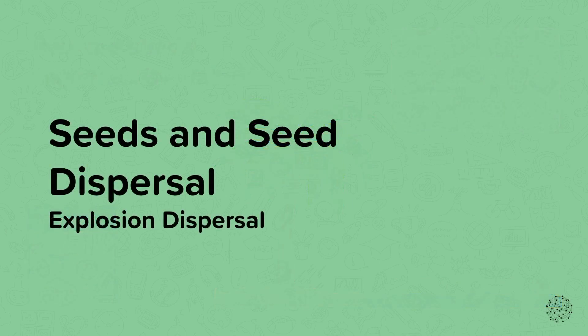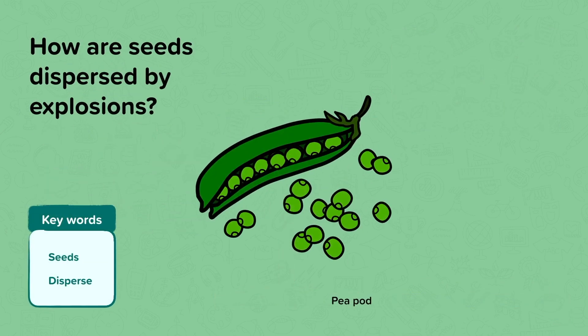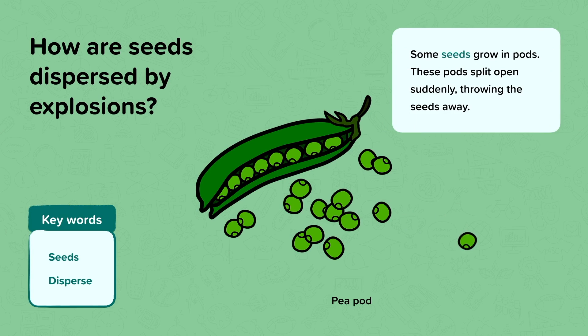Explosion dispersal. A pea plant stores its peas, which are the seeds, in special pods. How do you think the peas get dispersed from the pod? The pod splits open suddenly, throwing the seeds away from the plant. And this is an example of explosion dispersal.